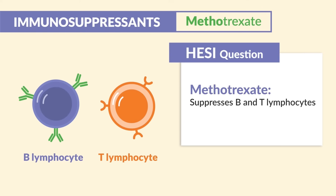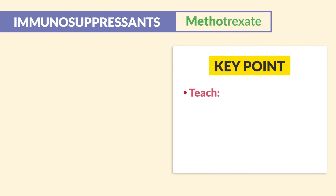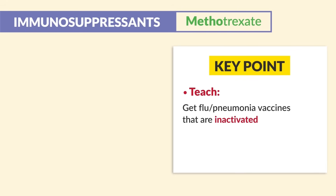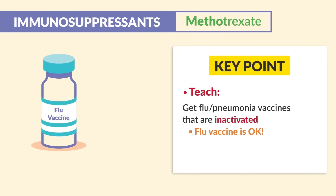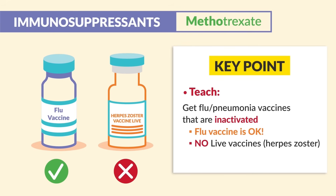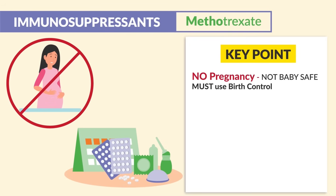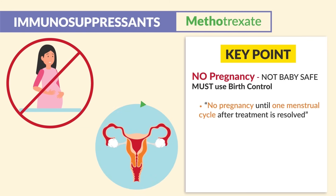Methotrexate suppresses B and T lymphocytes, meaning it suppresses white blood cells. Big teaching point: flu and pneumonia vaccines that are inactivated are fine — flu vaccines are not contraindicated. What IS contraindicated is live vaccines like herpes zoster. No pregnancy — methotrexate is not baby safe; teach patients to use birth control. No pregnancy until one menstrual cycle after treatment resolves, or three months after treatment finishes.